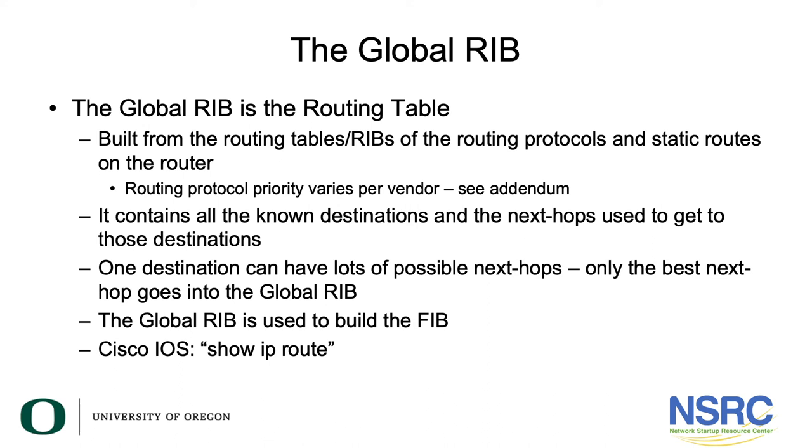The global routing information base is used to build the forwarding information base. With Cisco IOS, you can look at the global routing information base by typing the appropriate show command.